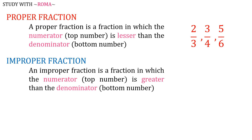On the other hand, an improper fraction is a fraction in which the numerator is greater than the denominator. For example, 7 over 6, 11 over 5, and 12 over 7.